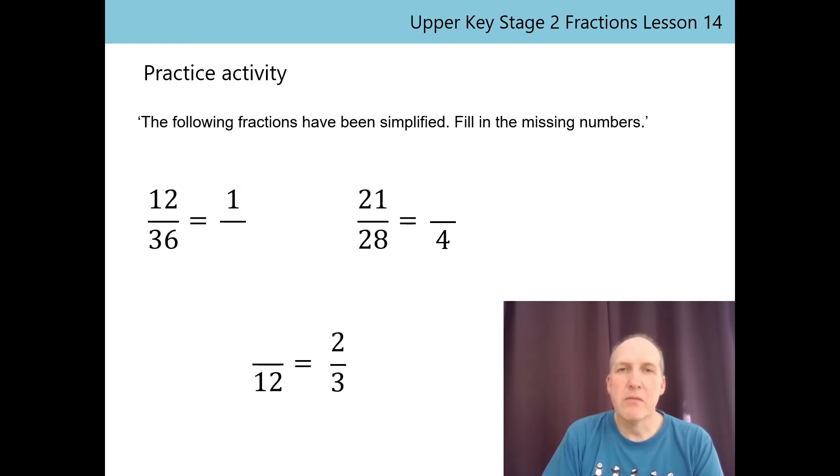In the first example, we know that the numerator is 1, but what's the denominator? I know to get from 12 to 1, I need to divide 12 by 12. Remember, when we simplify, we're not changing the size of the fraction, so I need to keep that proportional relationship between the numerator and the denominator. I have to divide the denominator 36 by 12 as well, and that gives me a denominator of 3. The simplified fraction is 1/3. Pause the video now. Have a go at the other two examples for yourself.